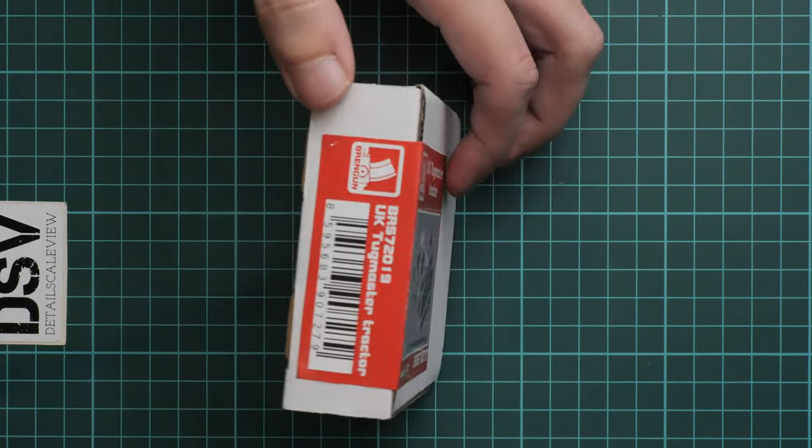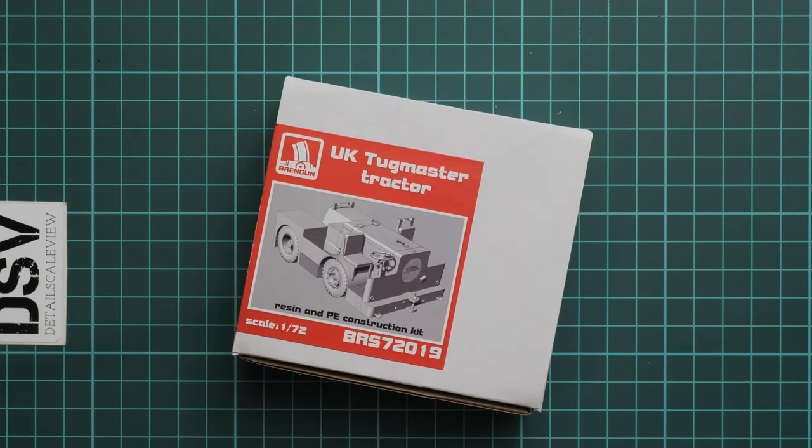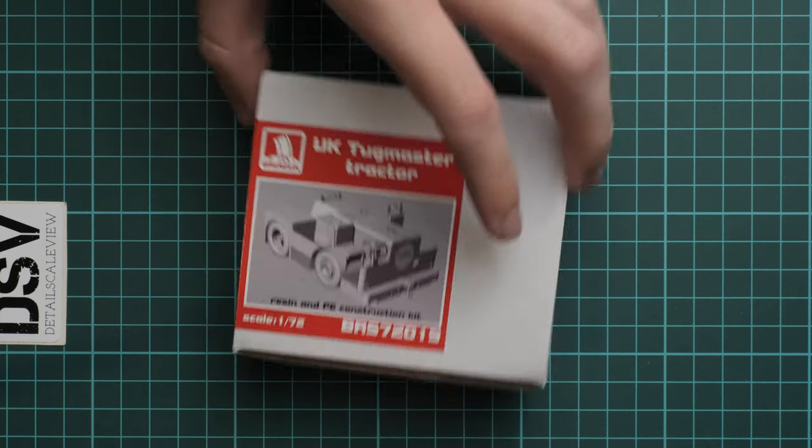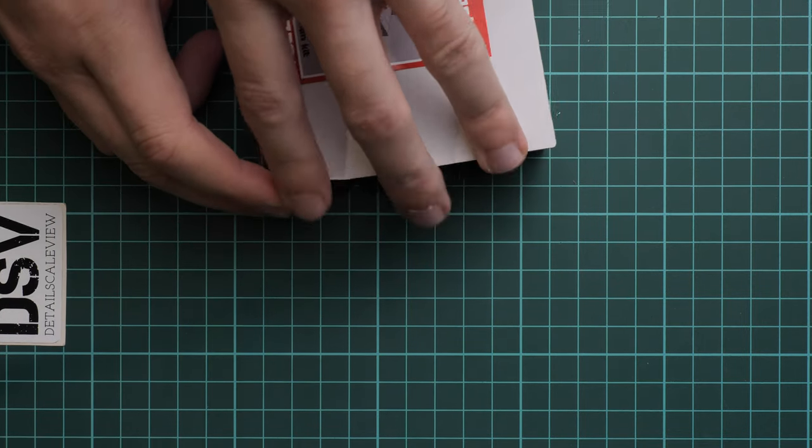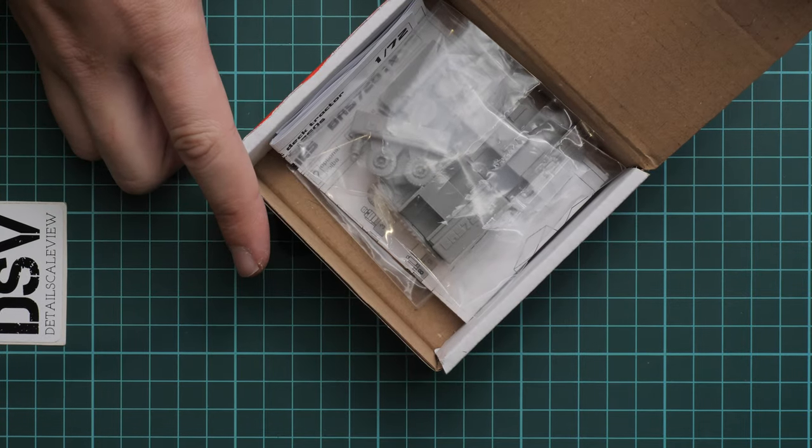As you can notice it is sealed with this sticker here, so I will have to use sharp knife in order to cut through. And therefore I will have to do it off the camera just to avoid any unpleasant accident. Okay, so we open it on the camera, I cut through this sticker and here you can see what we have inside.